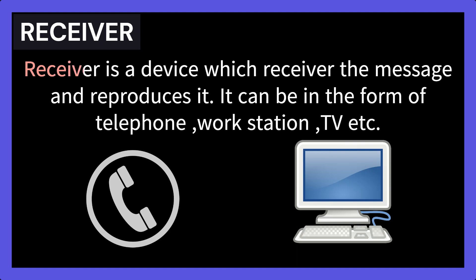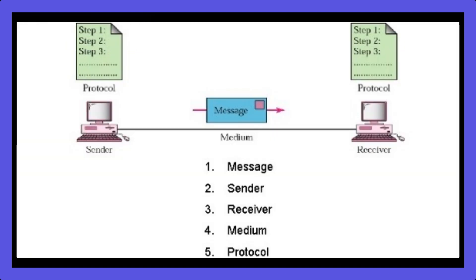Lastly, the receiver. It's a device which receives the message and reproduces it. It can be a mobile phone, computer, workstation, telephone, etc. So now, as we are done with the terms — in a data communication system, these components are compulsory and they work together for a successful communication.